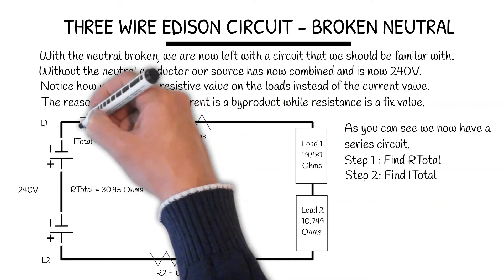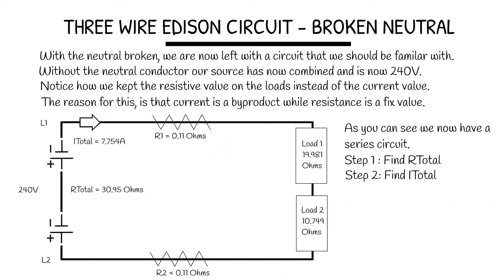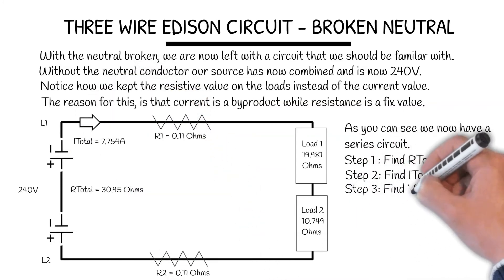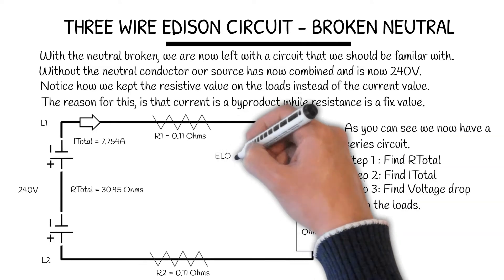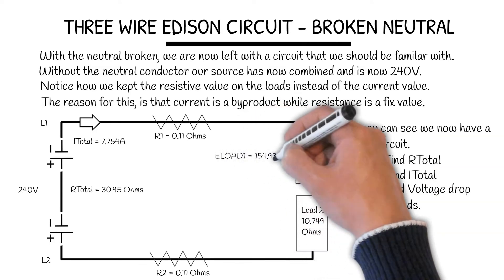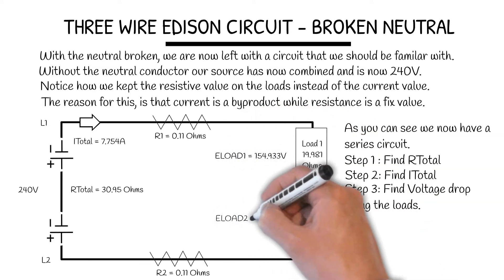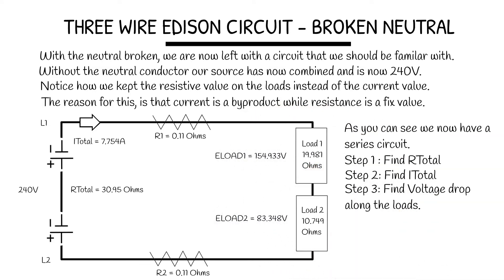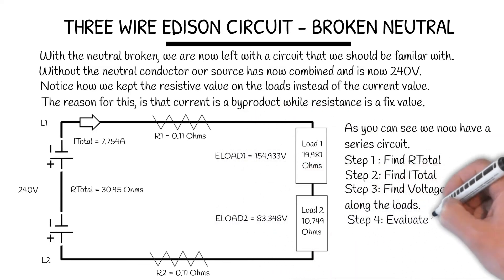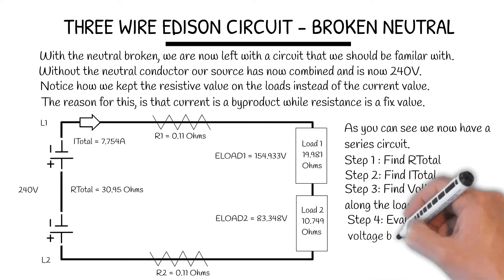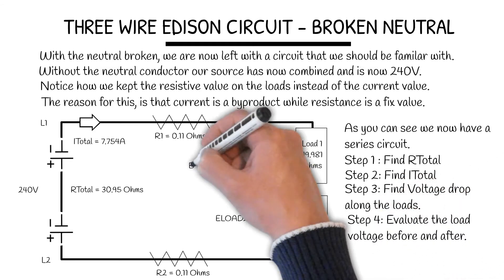We get a current of 7.754 amps. Now we find the volt drop across each load. Step 4, we want to evaluate the load voltage before and after.